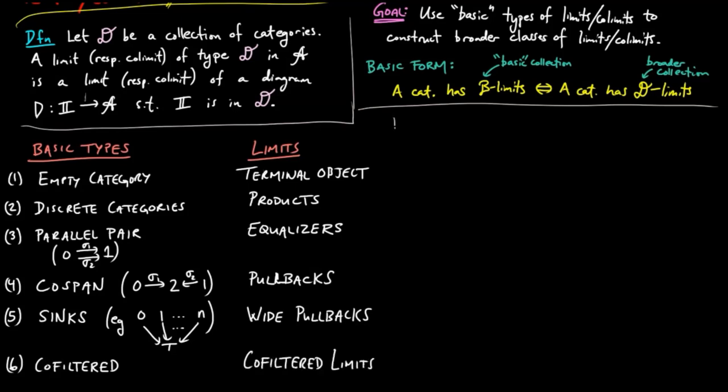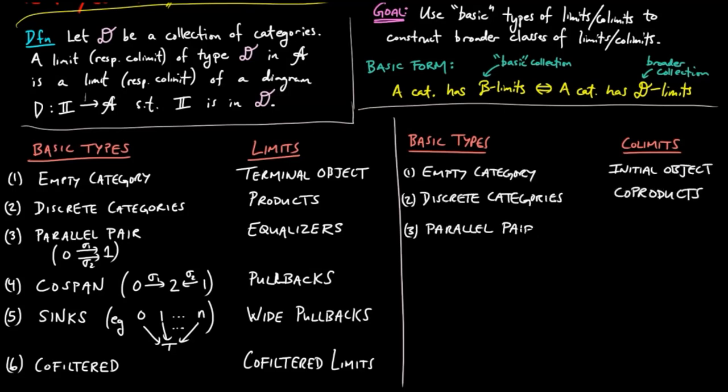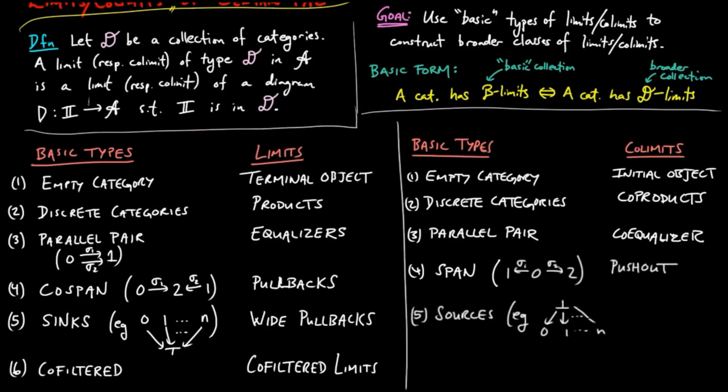Then to get the corresponding co-limits, all we need to do is take the opposite categories in those collections of basic types. This leads us to initial objects, co-products, co-equalizers, pushouts, wide pushouts, and filtered co-limits. Let's do this!